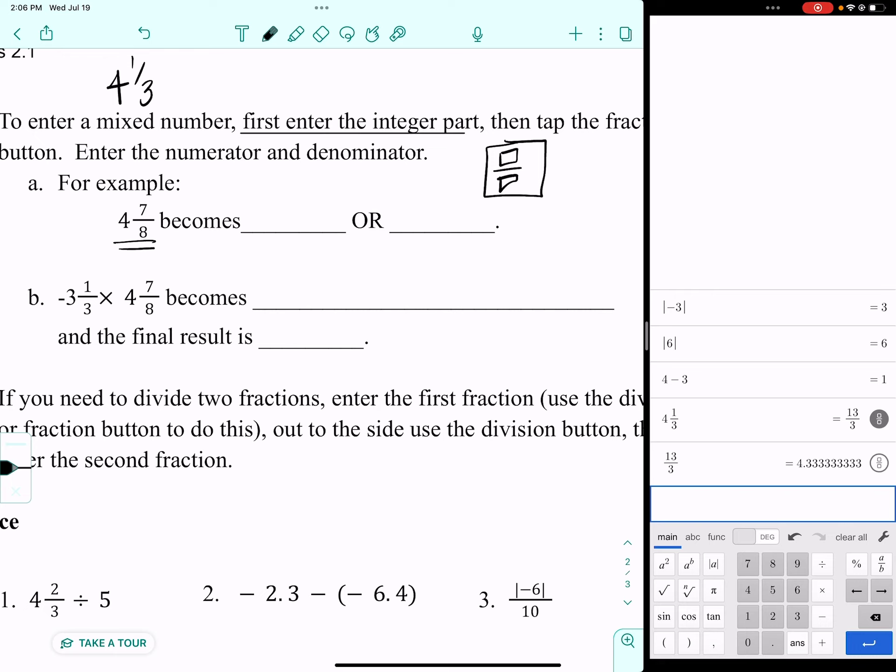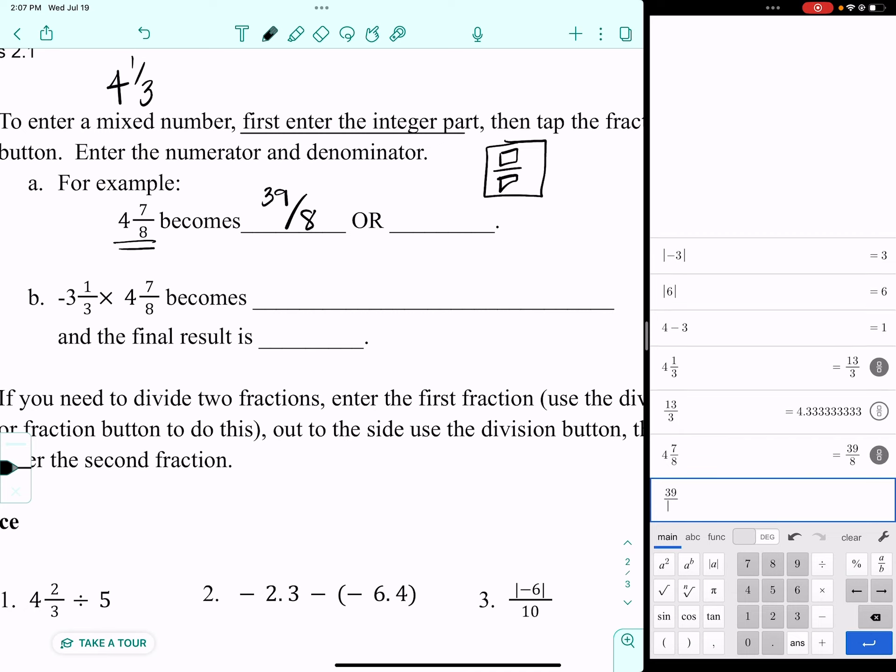I'm going to do our next one. I'm going to do 4 and 7 eighths. So there's 4. I'm going to immediately hit the fraction button and put in 7 over 8. When I hit the fraction button, that becomes 39 over 8, or if I want it as a decimal. So those are options that you have.